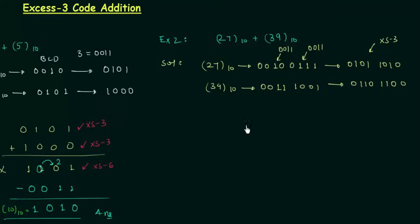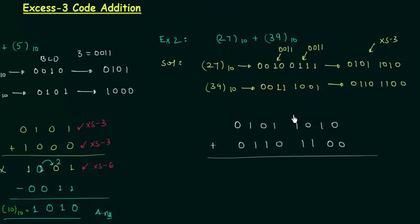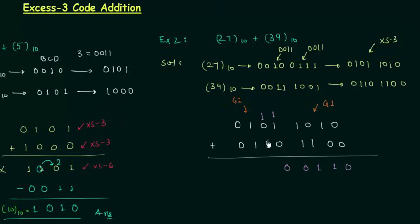Now we will perform the addition — this is very important so please pay attention. I will make two groups: the four rightmost bits will make group 1 and the four leftmost bits will make group 2. Now we will perform the addition. 0 plus 0 is 0, 1 plus 0 is 1, 0 plus 1 is 1, 1 plus 1 is 0 with carry equal to 1 — this carry is from group 1. 1 plus 1 is 0 again with carry 1, 1 plus 1 is 0 with carry 1, and 1 plus 1 plus 1 is 1 with carry 1, and finally we have 1.